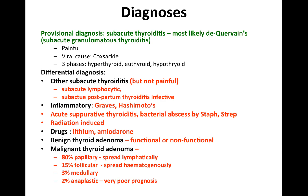In terms of other differentials, it could be another type of subacute thyroiditis, such as subacute lymphocytic thyroiditis or subacute postpartum thyroiditis, but usually these are not painful. It could also be inflammatory such as Graves' and Hashimoto's, or infective such as acute suppurative thyroiditis or a bacterial abscess caused by Staphylococcus or Streptococcus.